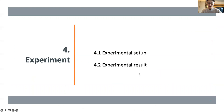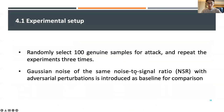For the experimental setup, because adversarial attacks are time-consuming and resource-consuming, we randomly selected 100 genuine samples for attack. We repeat the experiments three times and report the mean and variance of attack performance. We also introduce Gaussian noise with the same signal-to-noise ratio as a baseline for comparison.